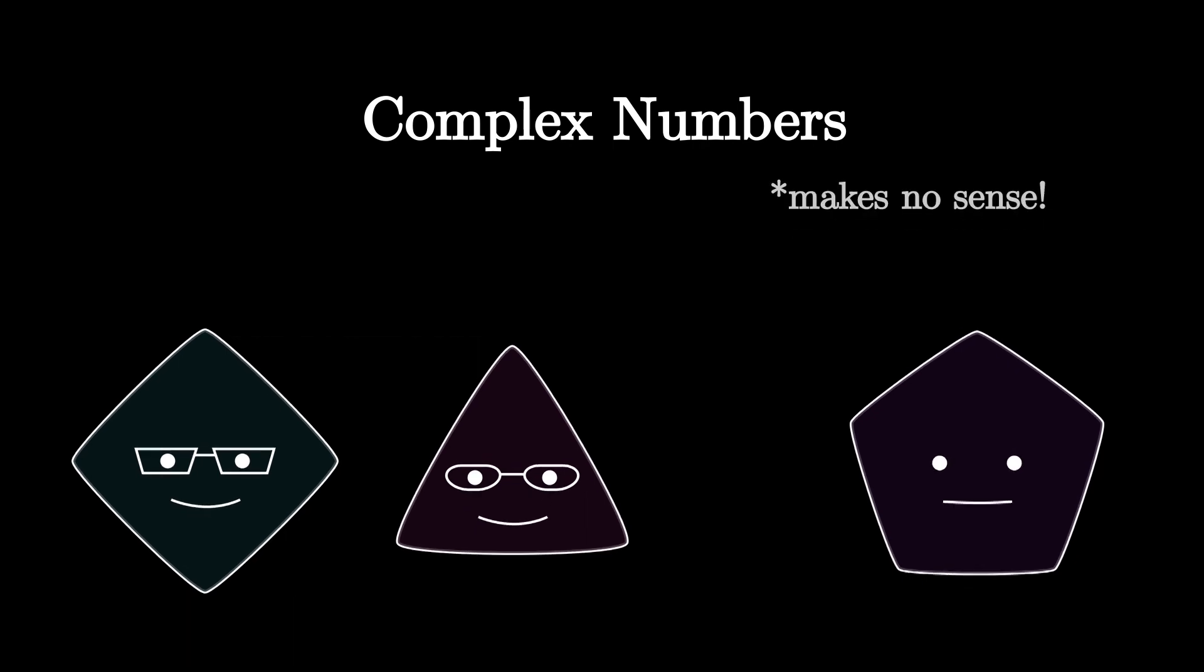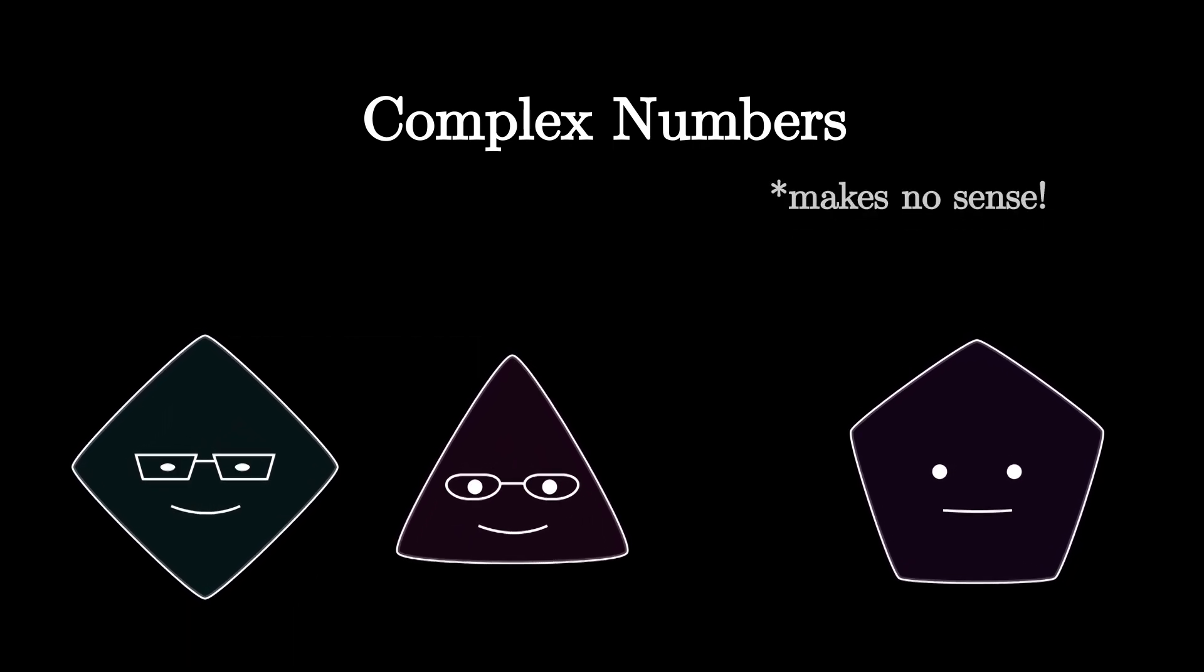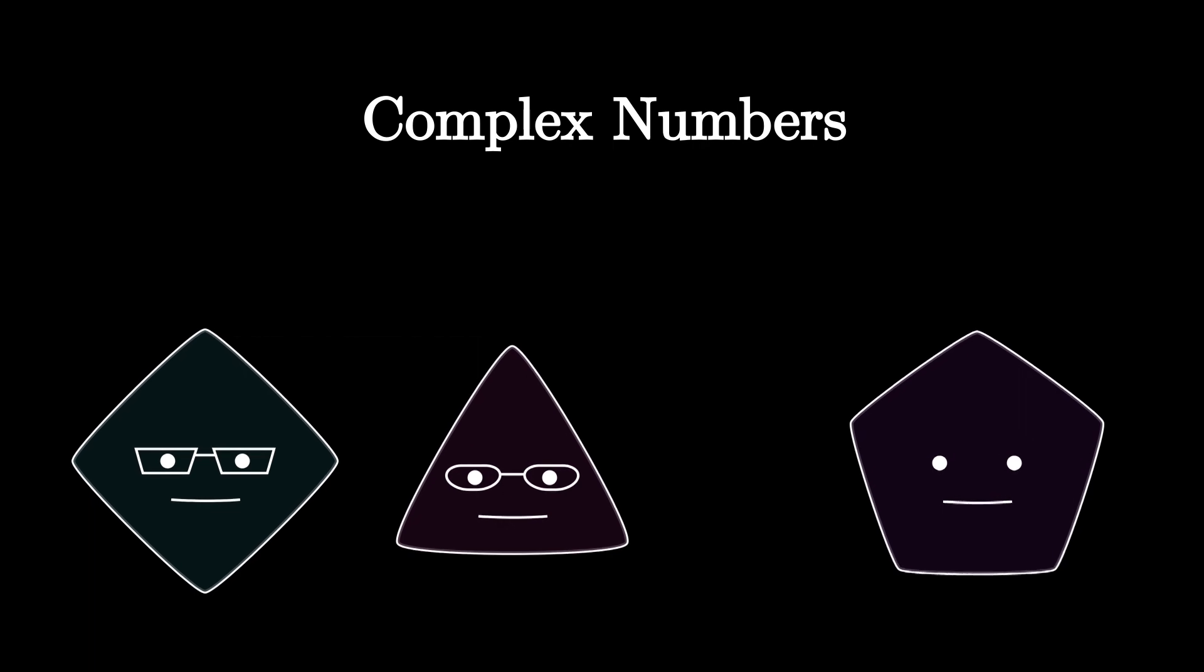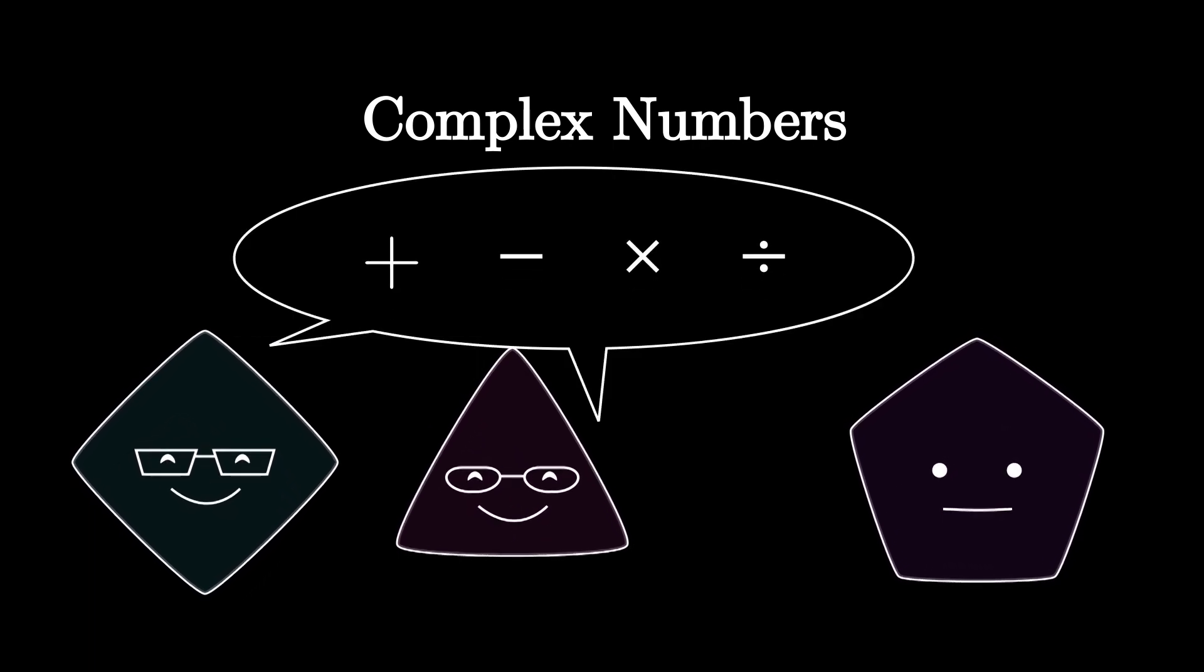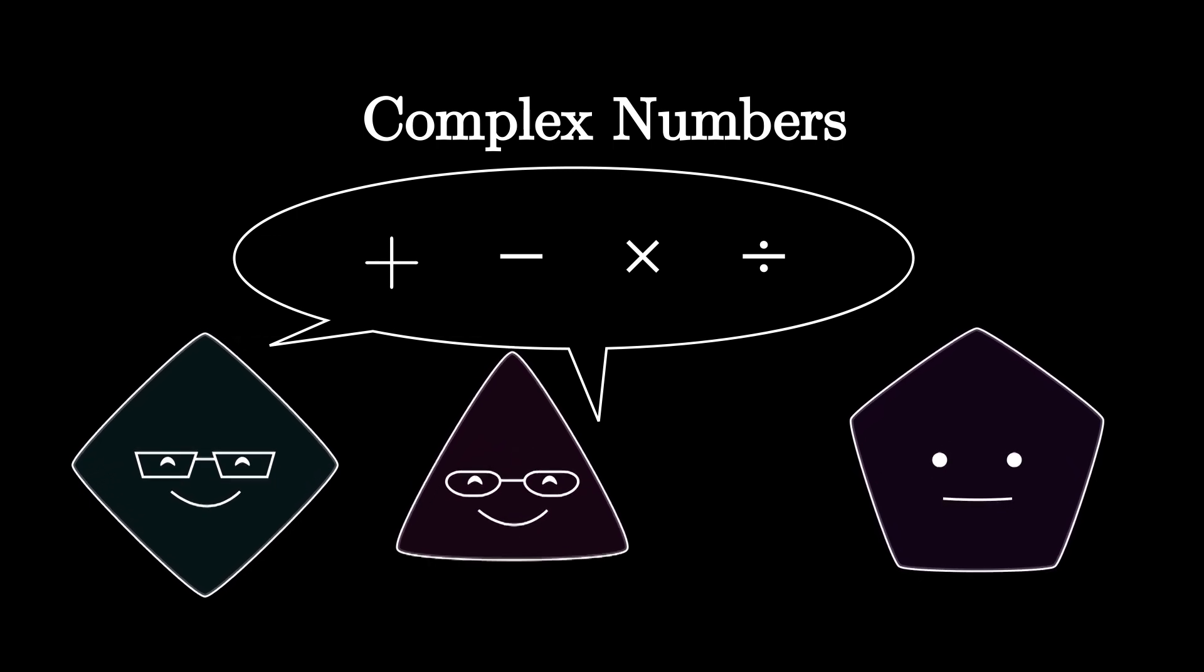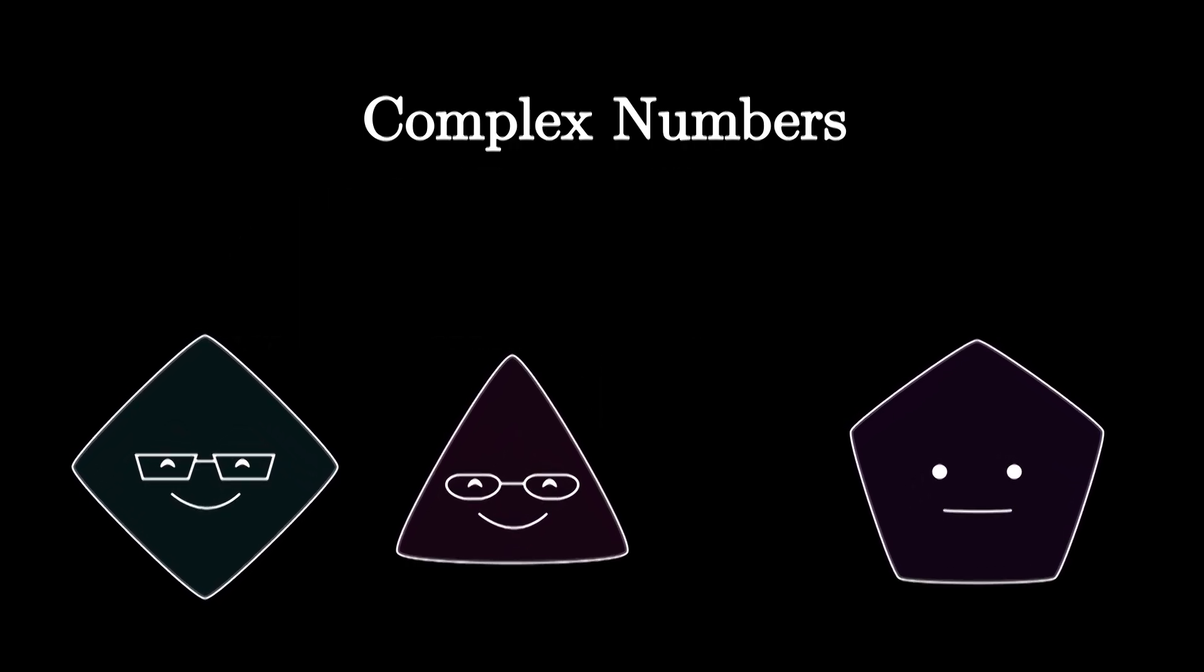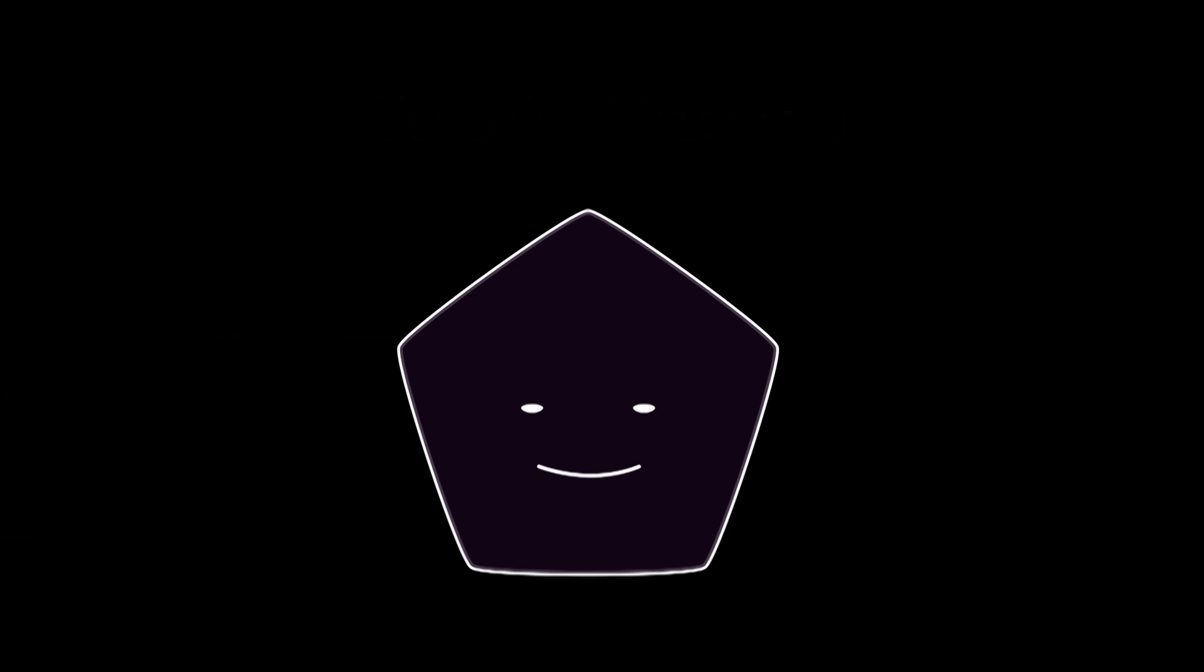But now what? What to do with these new numbers? Well, numbers actually don't make any sense until we define certain relations between them. So what mathematicians did was they defined basic operations like addition, subtraction, multiplication, and division for complex numbers. For now you don't need to know the details of how to compute these results, although the process is actually quite natural and simple.